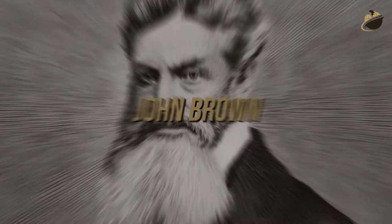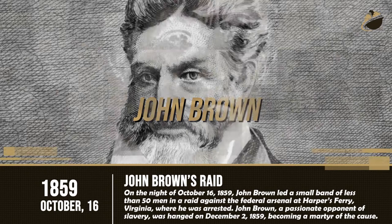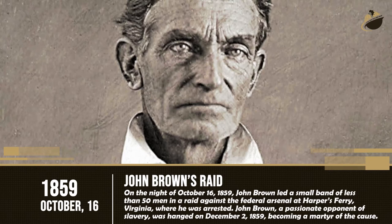1859 — John Brown's Raid, October 16. On the night of October 16, 1859, John Brown led a small band of less than 50 men in a raid against the Federal Arsenal at Harper's Ferry, Virginia, where he was arrested. John Brown, a passionate opponent of slavery, was hanged on December 2, 1859, becoming a martyr of the cause.